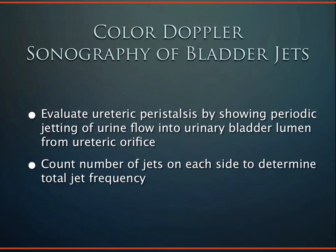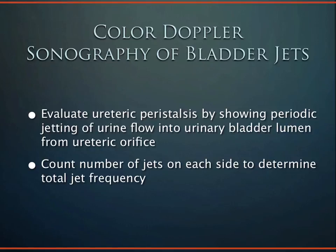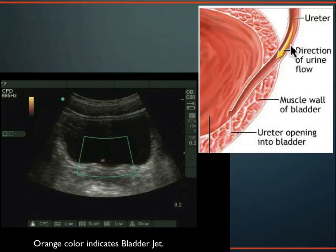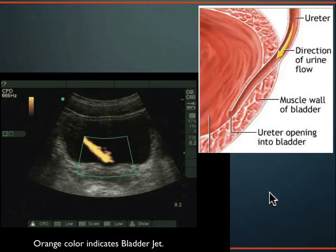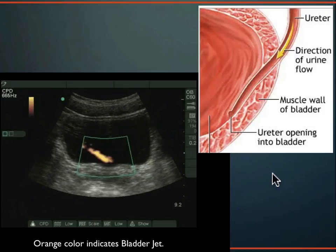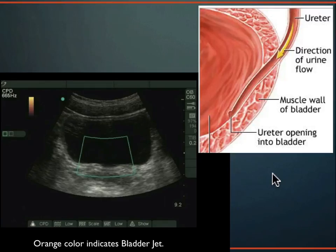Something cool about bladder ultrasound is that using color Doppler or power Doppler, you can see jets squirting through the trigone of the bladder from the ureters. On power flow Doppler, you can see the left ureteral jet firing into the bladder, then the right, then the left again. Power Doppler is very sensitive to flow — more sensitive than color Doppler — though it has no directionality. You can toggle between power and color Doppler on the machine.